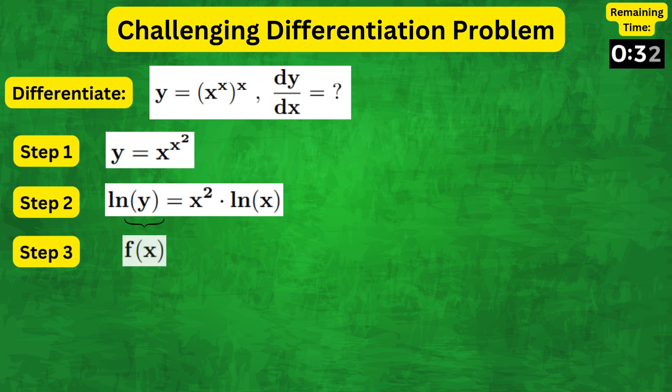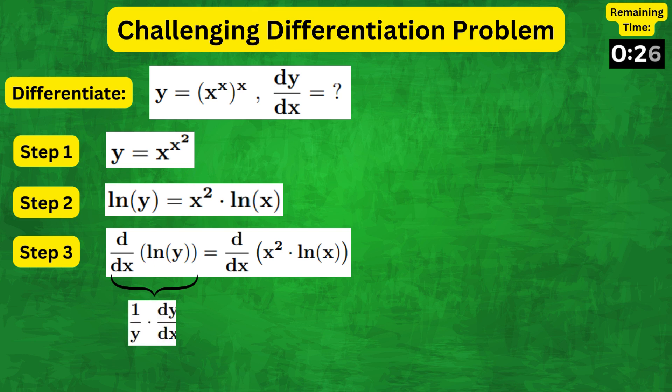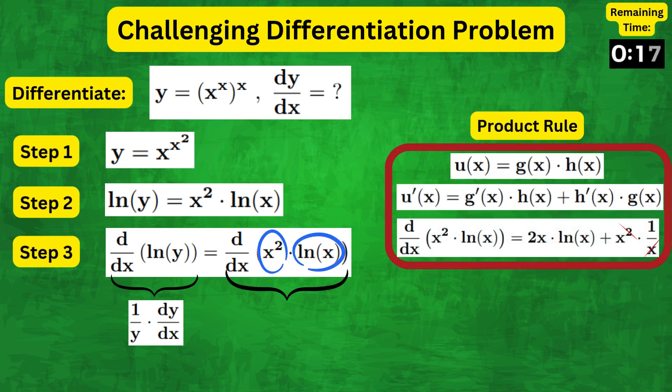Now, since y is a function of x, we need to differentiate implicitly. So, on the left-hand side, we get 1 over y dy by dx, and for the right-hand side, since we have two functions of x multiplying, we can use the product rule to get 2x natural log of x plus x.